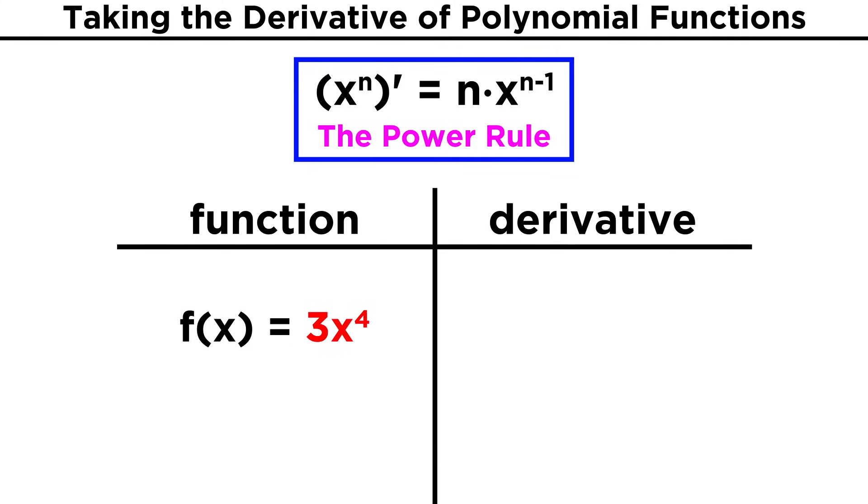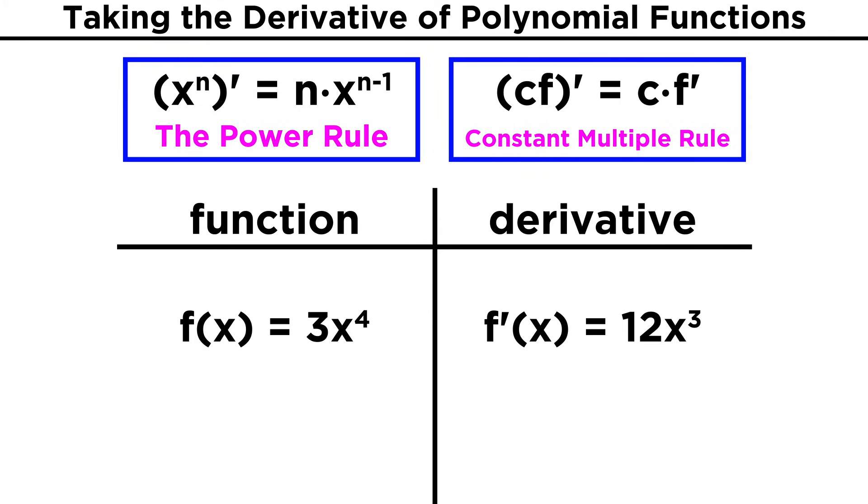Now let's take the derivative of three x to the fourth. As we are bringing this four down here, we must multiply by the three that is already there, so we get twelve x cubed. Another way of explaining this is by mentioning the constant multiple rule, which says that the quantity cf prime equals c times f prime. If we are taking the derivative of some function that is being multiplied by some constant, this will be the same as multiplying the constant times the derivative of the function. So we can just pull the constant out here. Using this to look at the previous example, the derivative of three x to the fourth, we can pull the three out, take the derivative of x to the fourth to get four x cubed, and then we simply multiply by the three that we pulled out before, and we get the same answer that we already had.